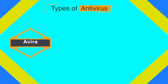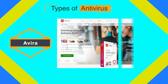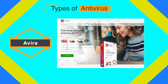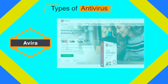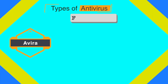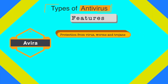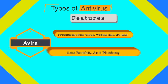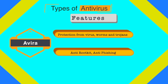The third antivirus is Avira, a comprehensive and easy-to-use antivirus program designed to provide reliable, free virus protection to home users. Avira's features include protection from viruses, worms, and trojans, as well as anti-rootkit and anti-phishing. Anti-phishing protects you when you receive emails claiming to be from a legitimate source and requesting personal information to claim a reward.